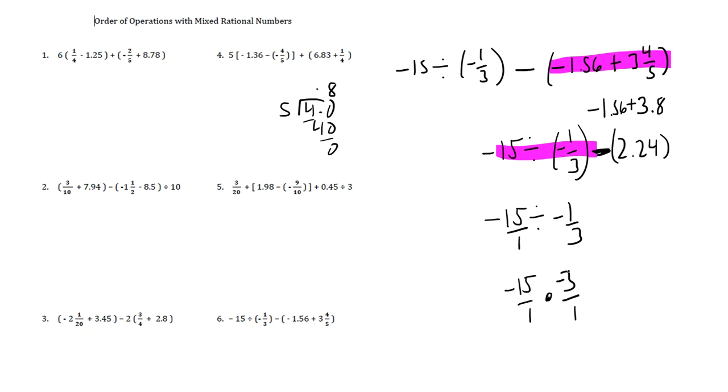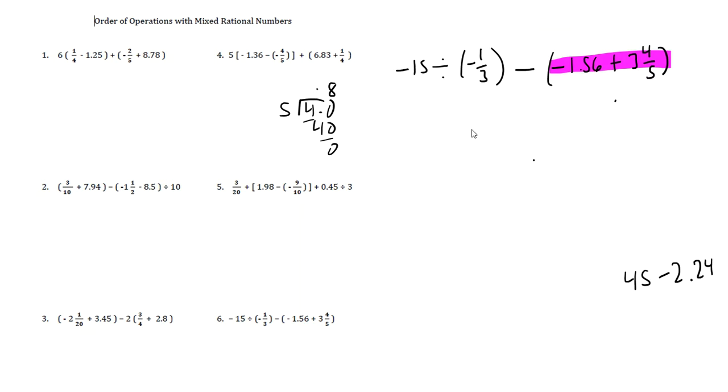A negative 15 times a negative three is a negative 45. And then we have a negative 45 subtract. Sorry. A negative 15 times a negative three is a positive 45. I'm sure you guys caught that. And then a positive 45 subtract a 2.24. And I'm all out of room here. So I'm going to go ahead and write this up here.